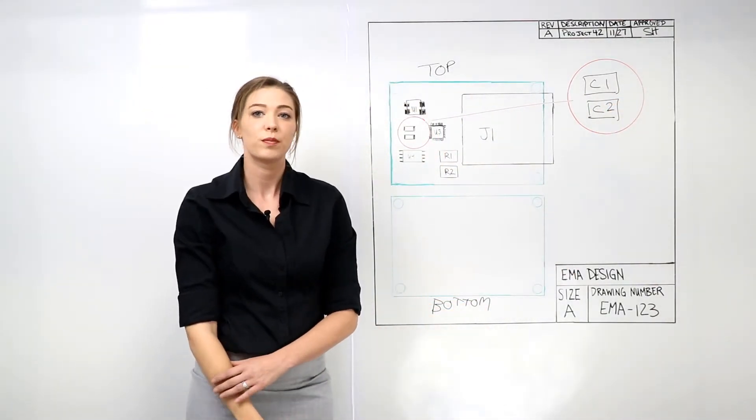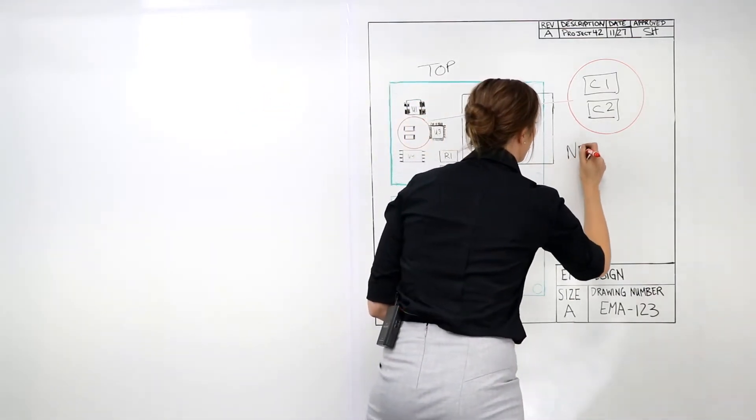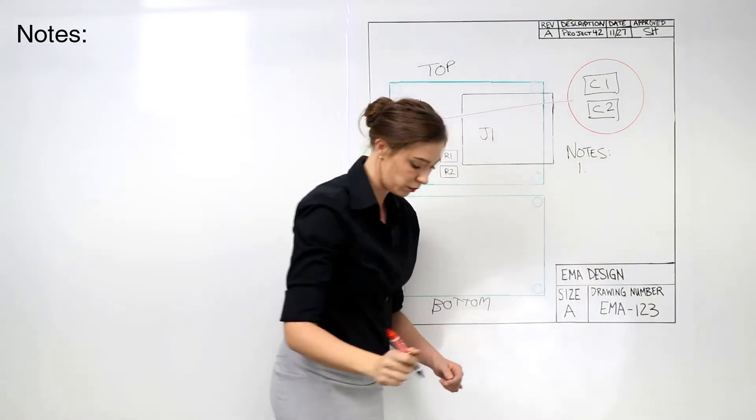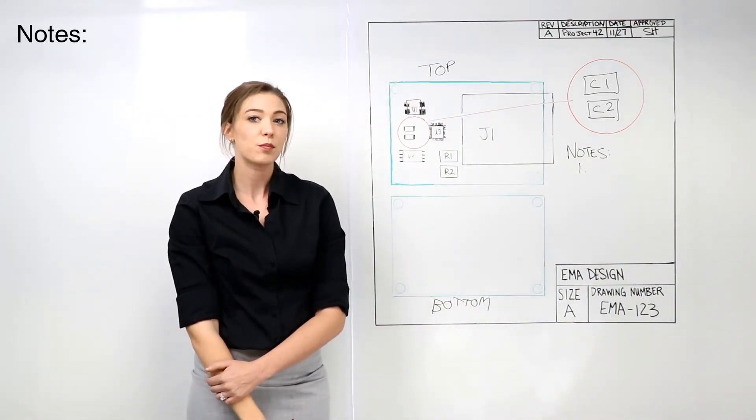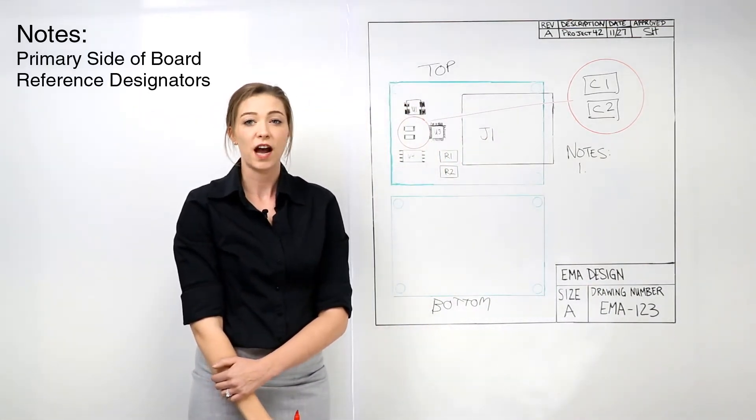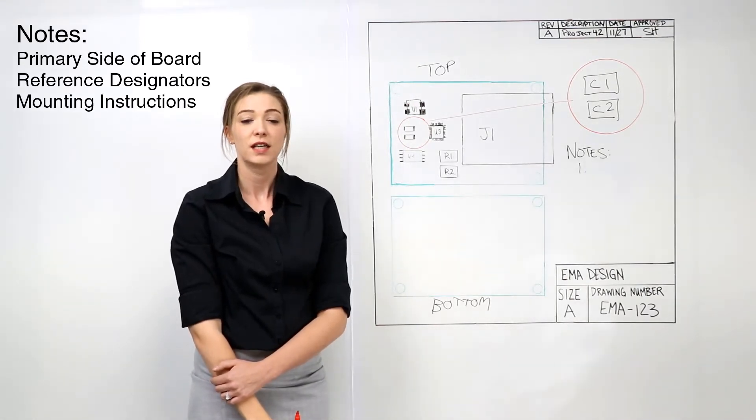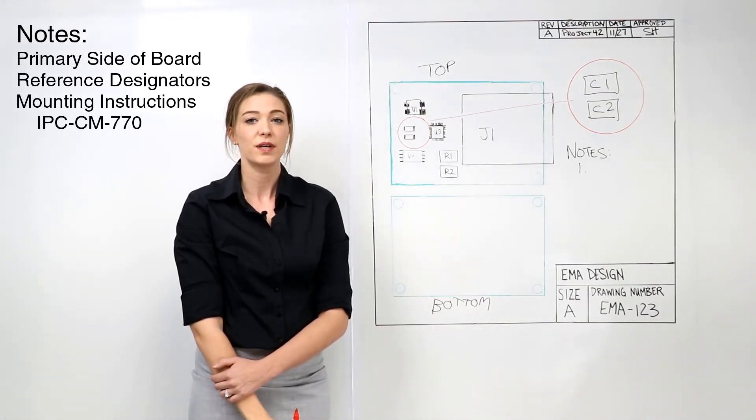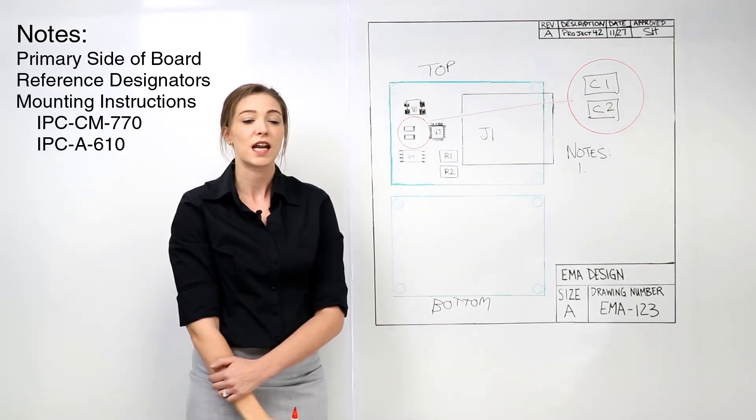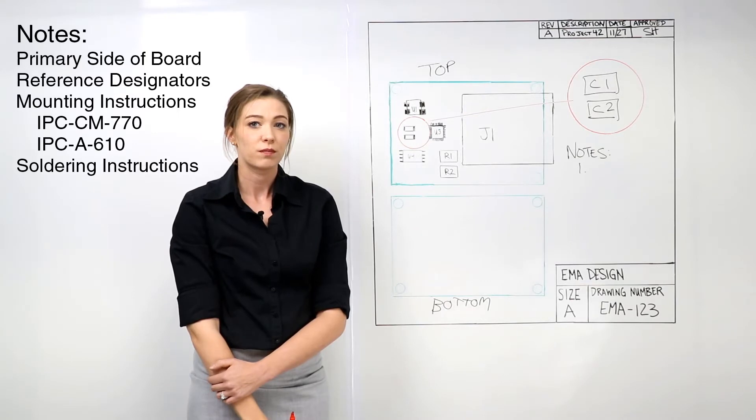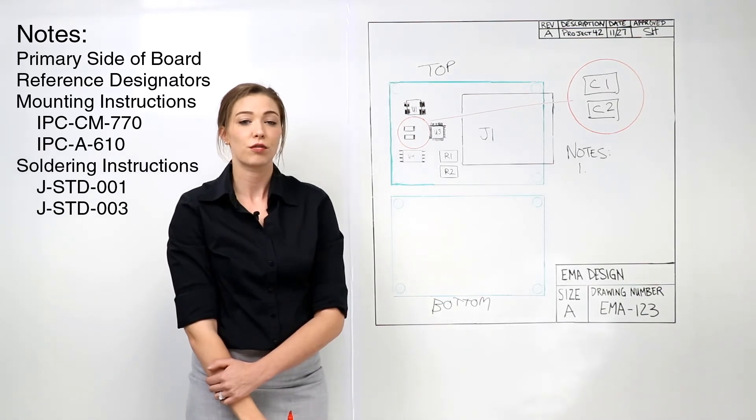There are several notes that should be added to the assembly drawing if applicable. Designate the primary side of the board. Define reference designators. Specify mounting instructions. Typical guidelines for this include IPC CM770 and IPCA610. Specify soldering instructions. The standard for this is JSTD001 for soldering and JSTD003 for testing.